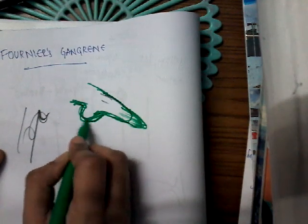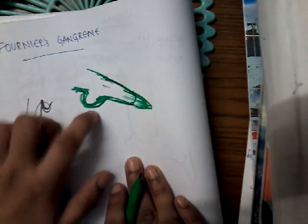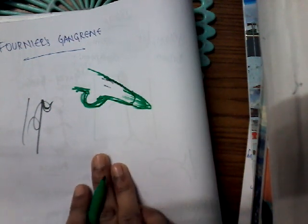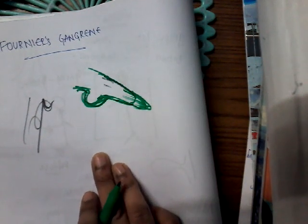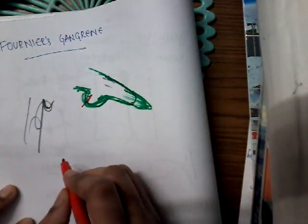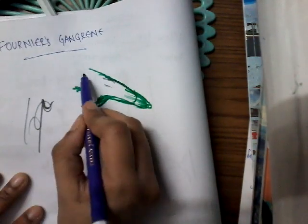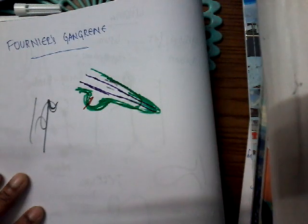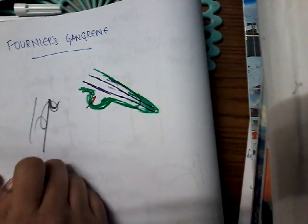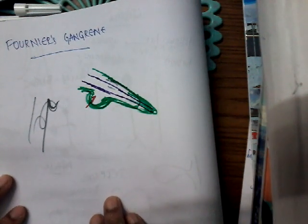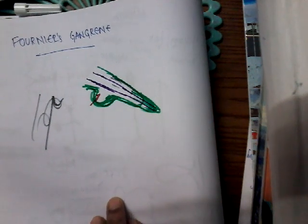There can be a fulminating inflammation of the scrotum — specifically of the subcutaneous tissues of the scrotum. This can occur due to: number one, minor injury; sometimes due to dilatation of the urethra or procedures involving the urethra; and sometimes when we give injection treatment to hemorrhoids — even during that time, we can get Fournier's gangrene.